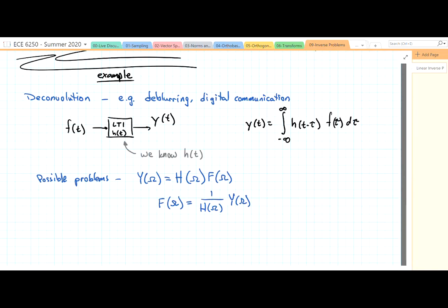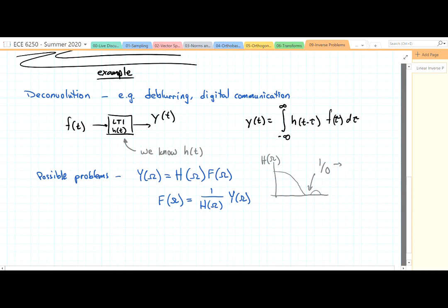Well this works really well unless you had an h(Ω) that maybe looked like this. So at this point, one over h(Ω) is going to give you one over zero, which is dangerous. So in general, while this idea is nice and there are situations where it works, danger. But we'll talk about this more later as we go along.